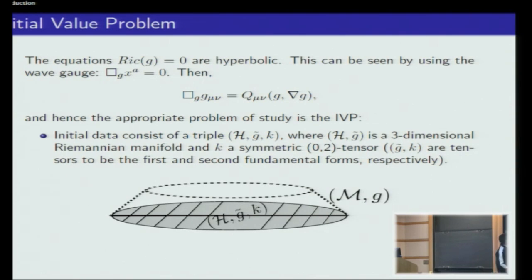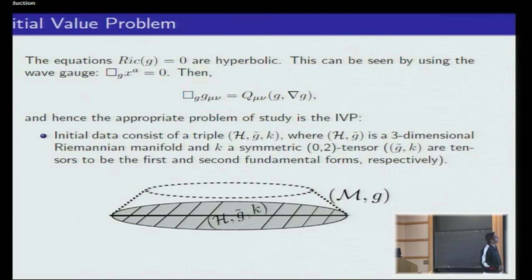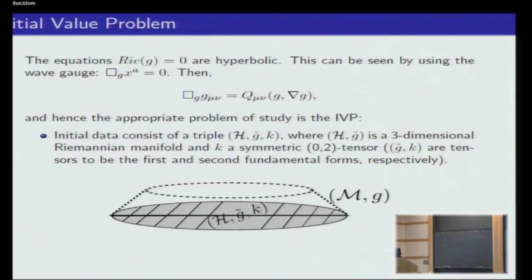The equations we are interested in are the curvature equations — the Ricci curvature equal to zero. Once you impose gauge conditions on the coordinates and write these equations in coordinates, you see that the Einstein equations are simply a system of quasi-linear wave equations. So the Einstein equations are hyperbolic equations.